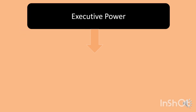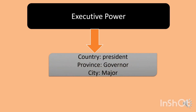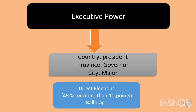For example, in executive power in any democratic country, the executive power is the president at the national level, the governor in the province, and the mayor in the city — as it happens in our country, Argentina. In Argentina, we elect the president, governor, or mayor with direct elections. This means that you vote directly for him or her.